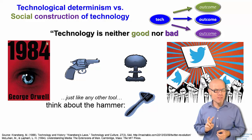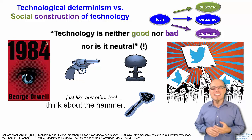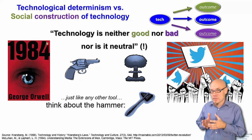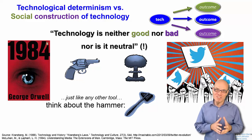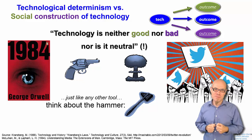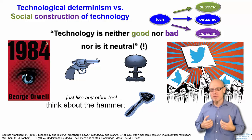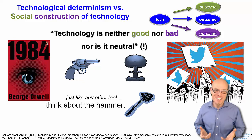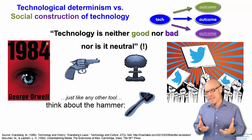These last two examples — guns and bombs — also show you that while technology might not be inherently good or bad, it might also not be neutral. Guns are made to shoot things and bombs are made to blow things up. So technology is neither good nor bad, nor is it neutral. This is more of a philosophical statement — philosophers tell you it's not this and not that, but that's how it is.